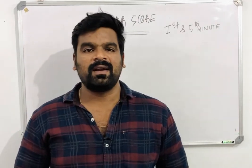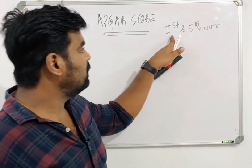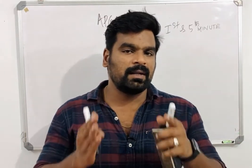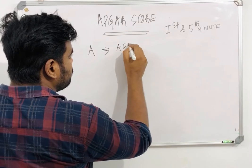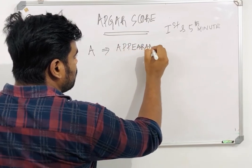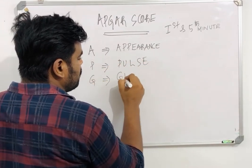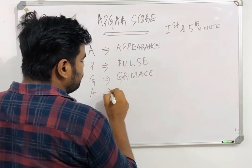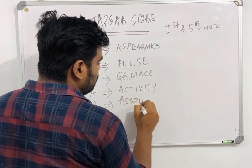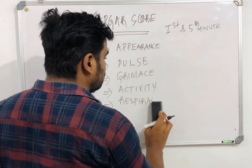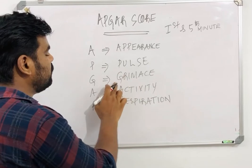Hi all, today we are going to discuss the APGAR score. APGAR score is done immediately after birth — at the first minute and fifth minute. Each letter stands for: A for Appearance, P for Pulse, G for Grimace, A for Activity, and R for Respiration.